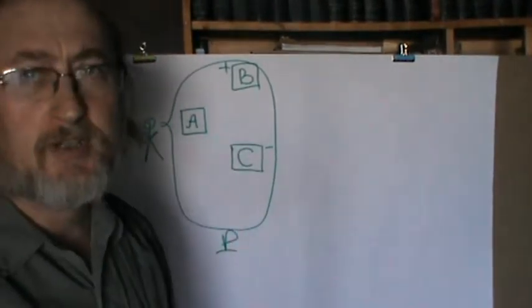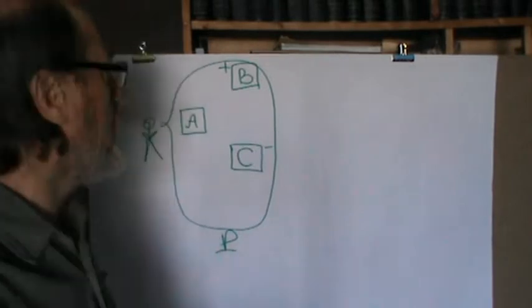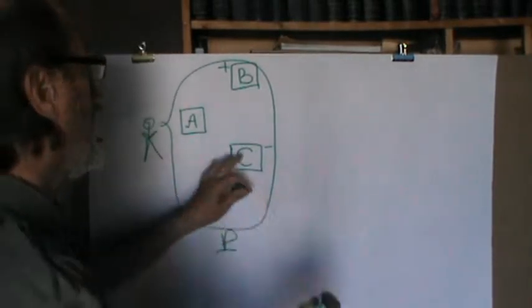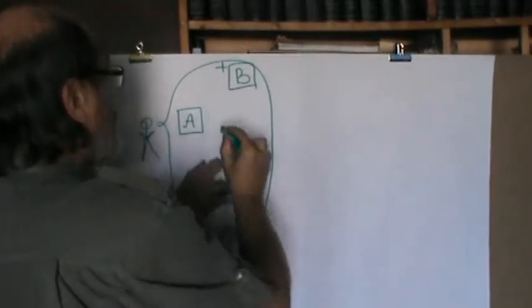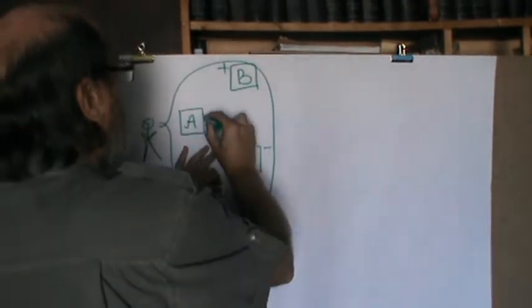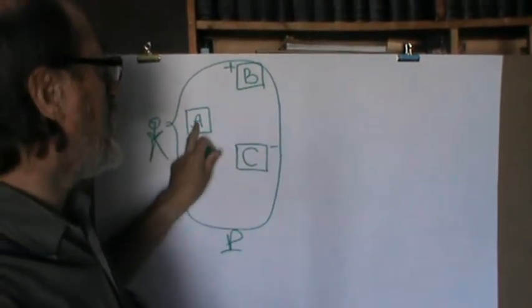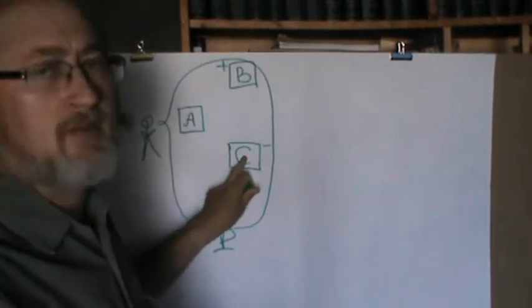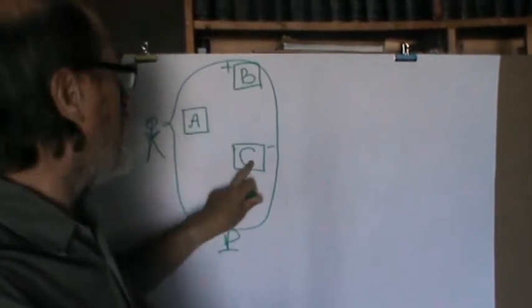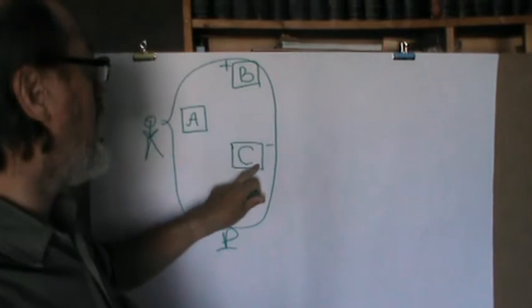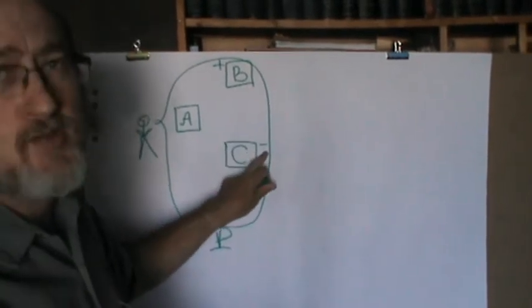And the person is trying, is dreaming of how to change state A to make it B, but never dreaming of making it C because C is worse.